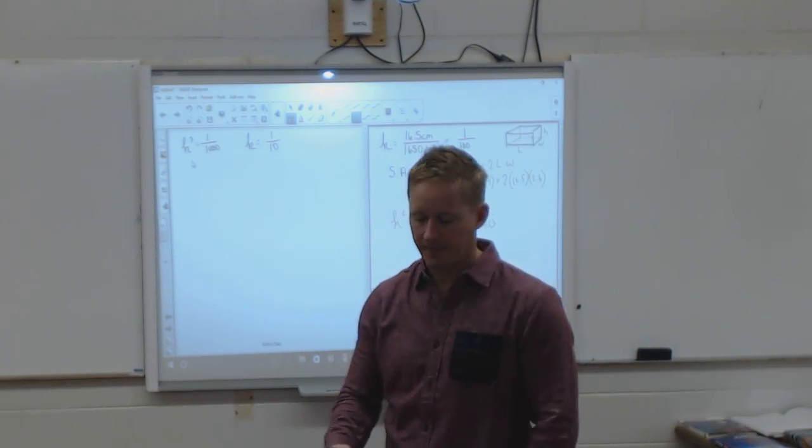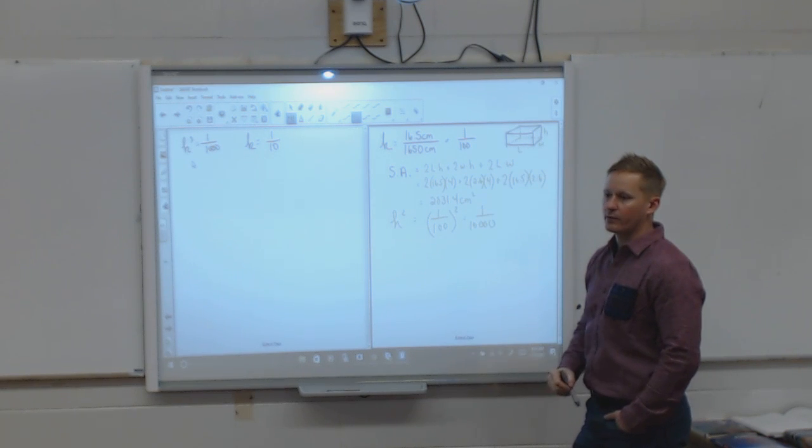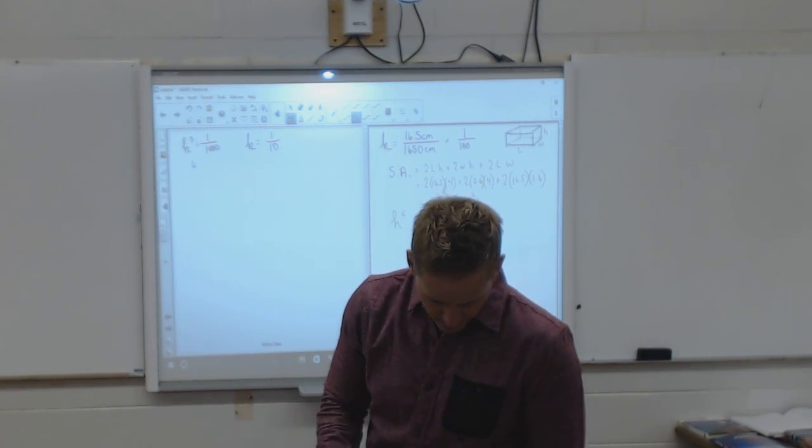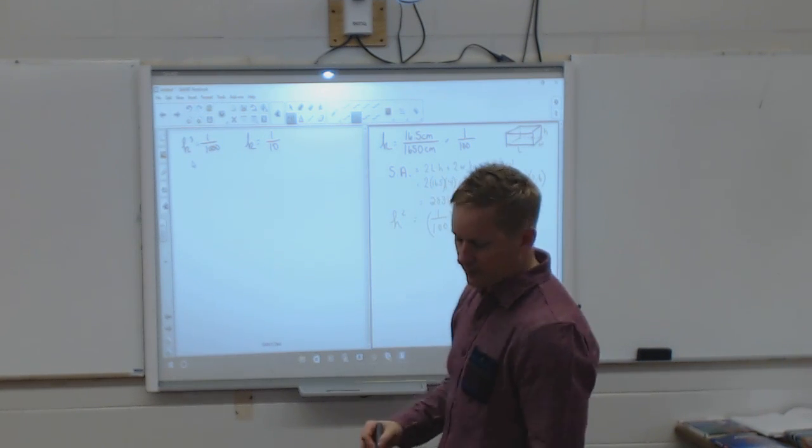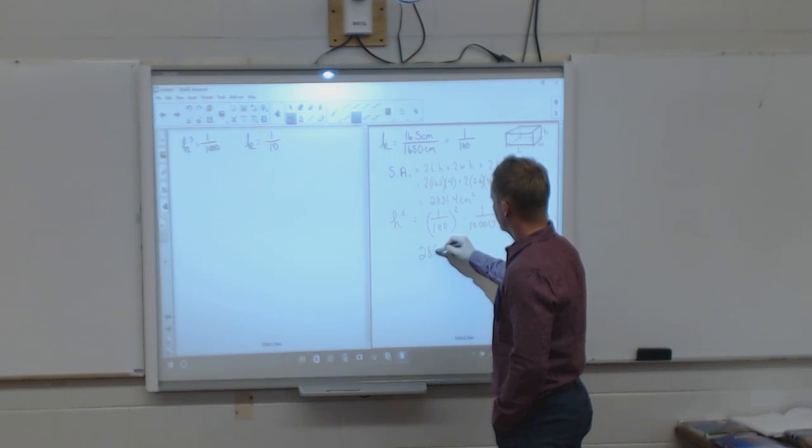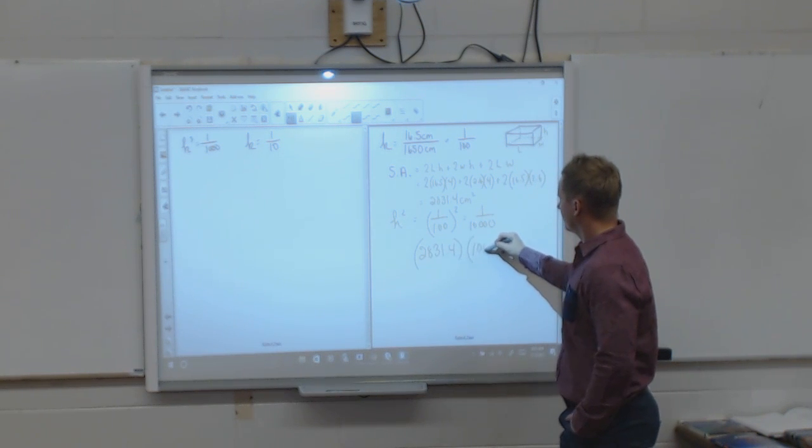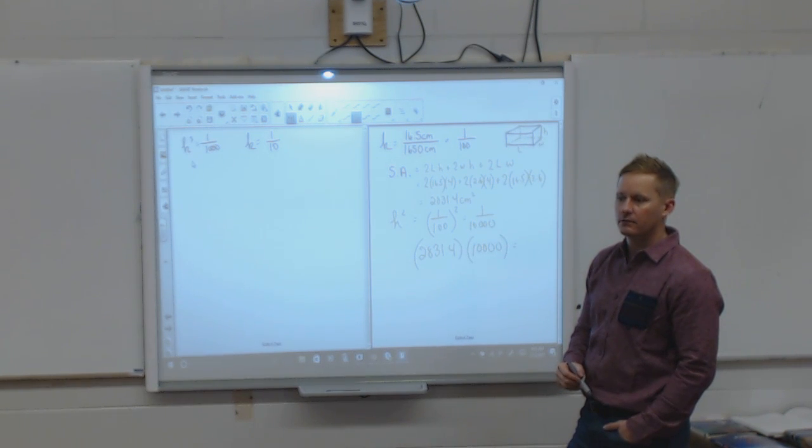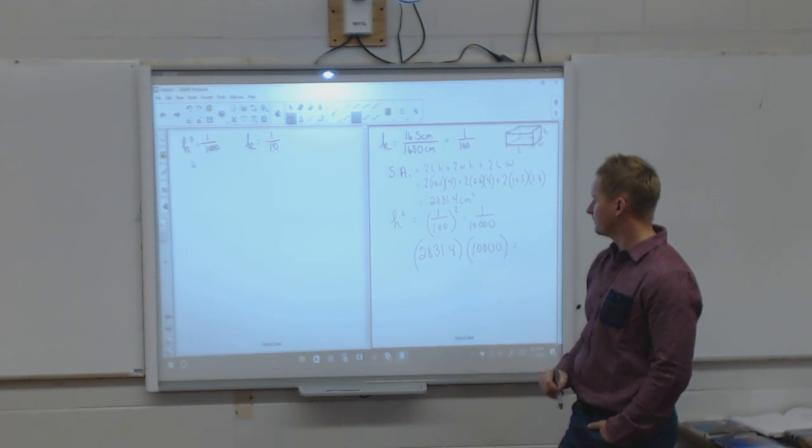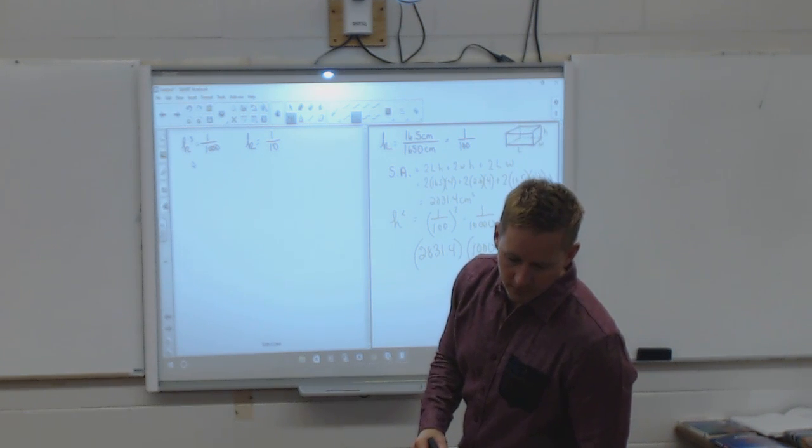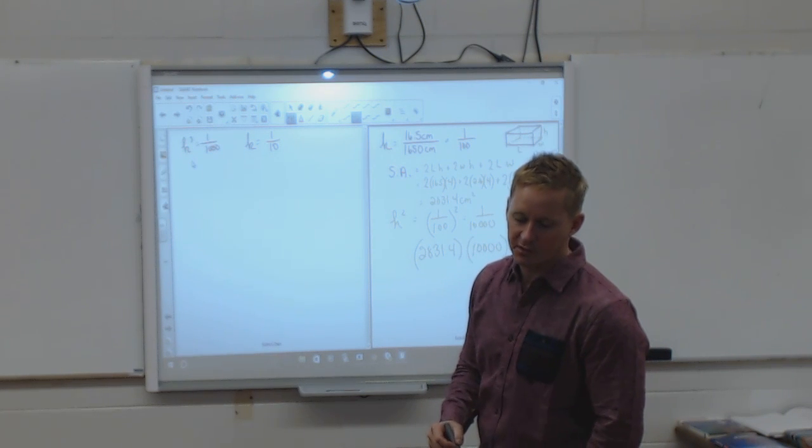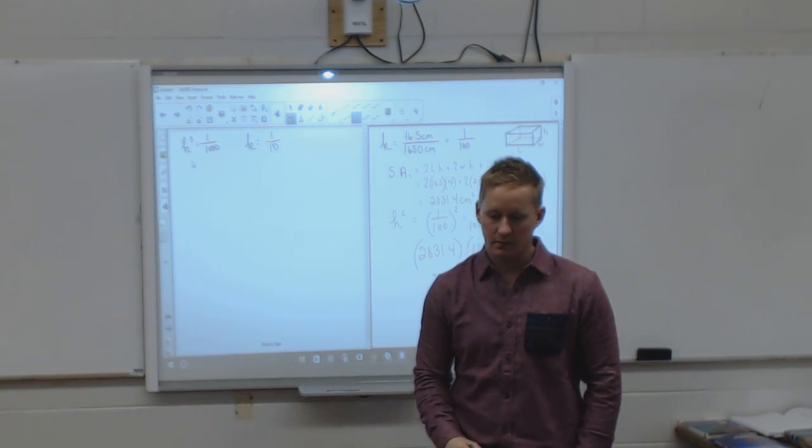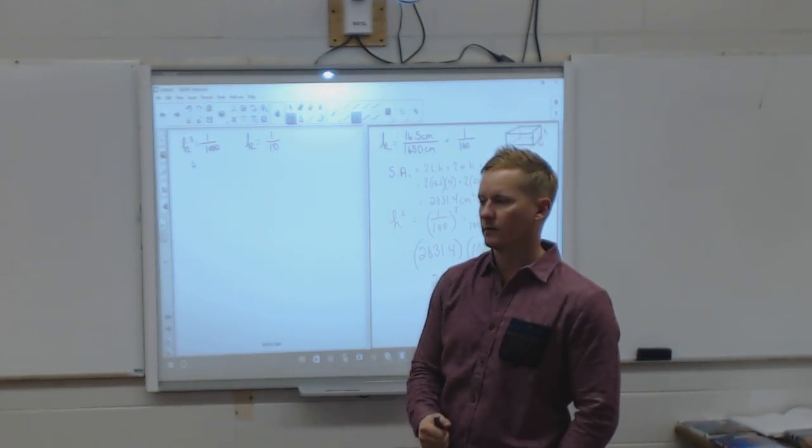So now that I know it's been reduced to 1 over 10,000 the surface area, I take this, 28,314, and I'm going to times it by 10,000. And that's going to give me the surface area of the actual train, in centimeters squared. So what is that? Works out to 28,314,000 centimeters squared, or 2,831.4 meters squared.